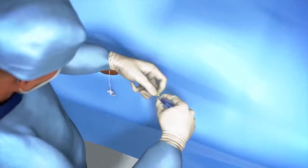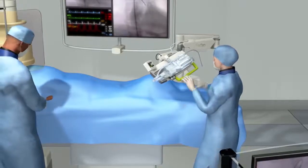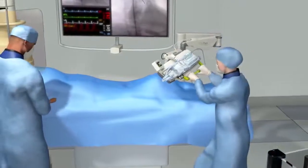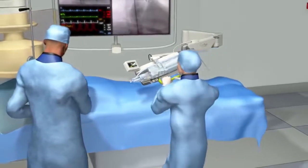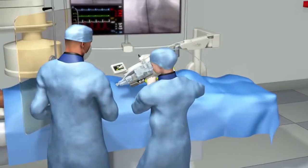With CorePath's bedside unit draped, the scrub staff moves the extended reach arm into position. You can now see the single-use cassette mounted on the robotic drive, where the interventional devices will be loaded.